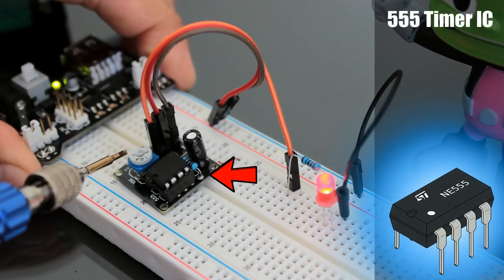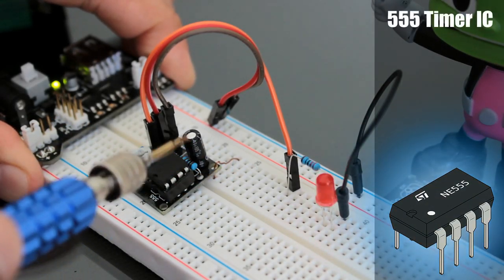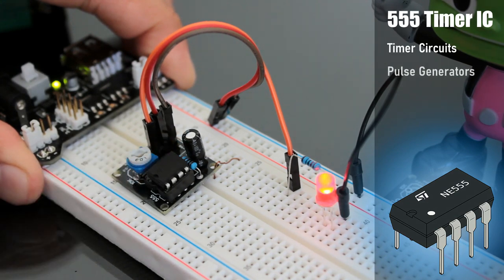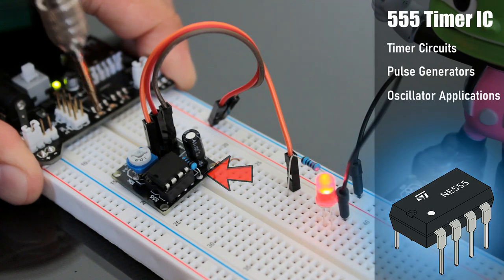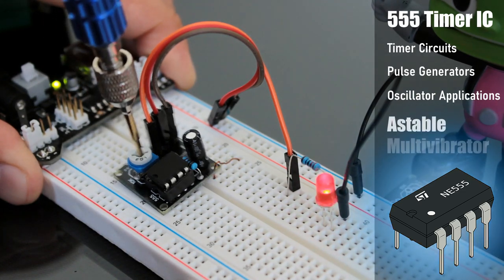The 555 timer IC is an integrated circuit that is used in a variety of timer circuits, pulse generators and oscillator applications. The heart of this tutorial is the 555 timer IC that is wired as an astable multivibrator.